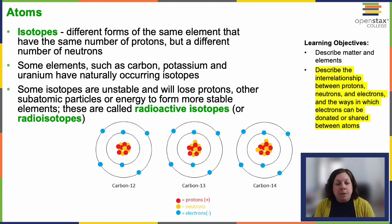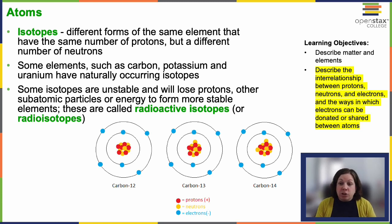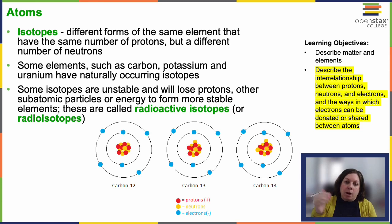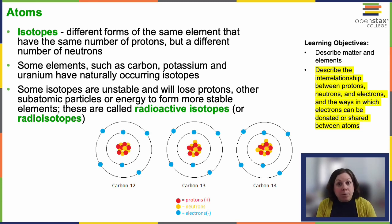Some isotopes are unstable and will lose protons or other subatomic particles, or even just energy, to try to form a more stable element. We call these radioactive isotopes, or radioisotopes. Radiocarbon dating — you've heard the term — allows us to use this property of change in neutrons to determine how old things are. Let's look at that a little more closely.